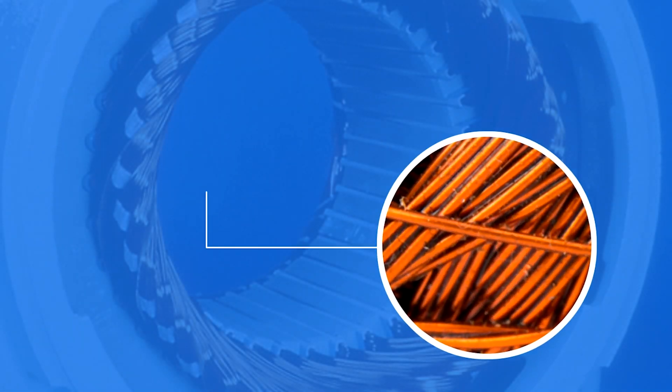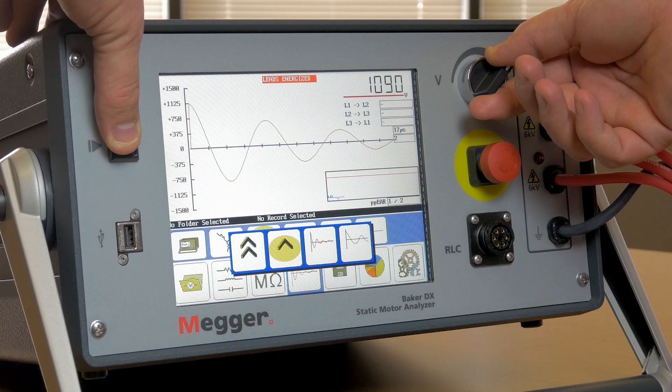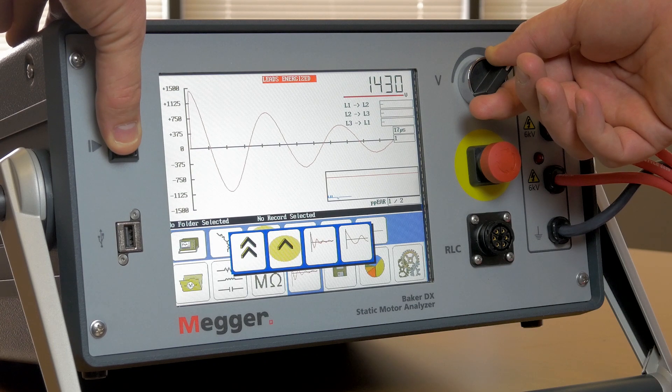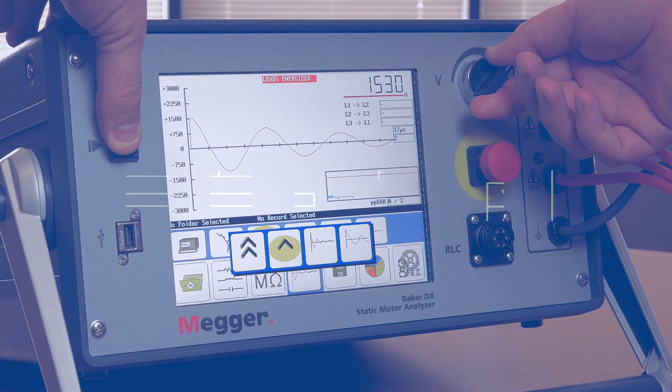The most common insulation fault is a turn-to-turn insulation failure. A surge test is the only test that can find turn-to-turn insulation weakness and failures. Let's look at how a surge test works.